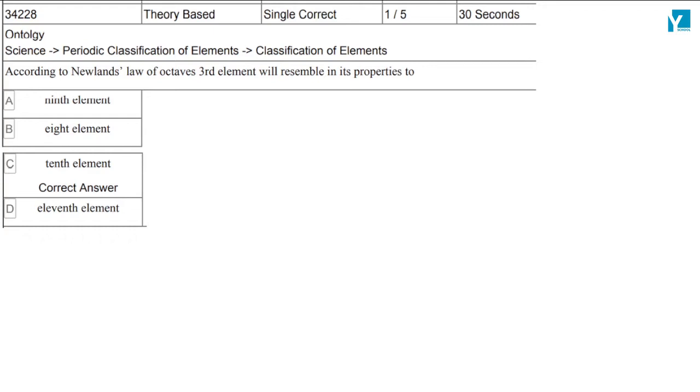Newland told us that when we arrange seven elements in increasing atomic mass, the eighth element matches the first element in properties.